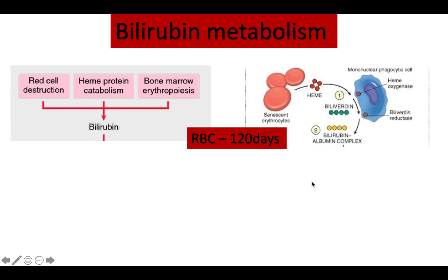Bilirubin is a component formed by the breaking down of hemoglobin. In order to form bilirubin, you must have free hemoglobin — somehow hemoglobin has to get out of red blood cells. Hemoglobin or heme can be found within the body through red cell destruction (RBC hemolysis), heme protein catabolism taking place within the liver, or bone marrow erythropoiesis.